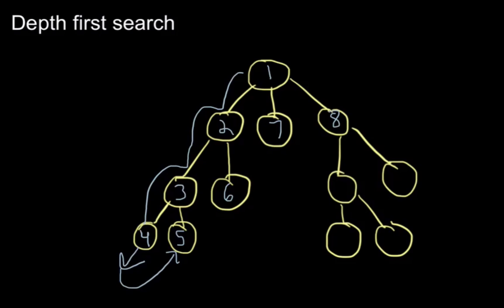So we're gonna come down here to nine, ten. Now ten is a leaf node, so we simply go to eleven and then twelve. And that's it. So this is how to do depth-first search.